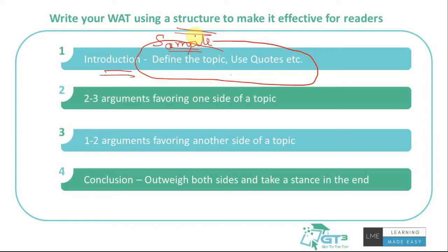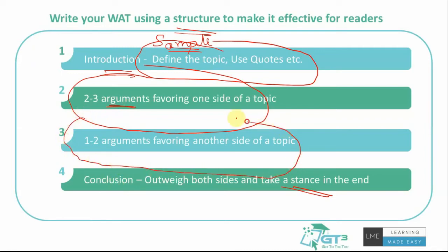Most topics will have two sides to them. If the topic is 'Should the government cut subsidies?', you can write points in favor of cutting subsidies and points against it. Whatever side you strongly believe in should get more arguments, as that aligns with your conclusion. However, to show you are unbiased and looking at both sides, it's important to also include a couple of arguments for the opposing side — perhaps two different paragraphs or blocks, one for each side.